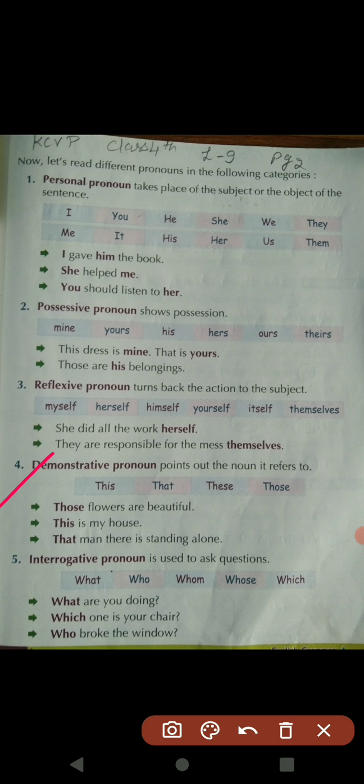Fourth is demonstrative pronoun. In demonstrative pronoun, we point out a specific noun it refers to. The words are: this, that, these, and those. Only four words come under demonstrative pronoun — this, that, these, and those.